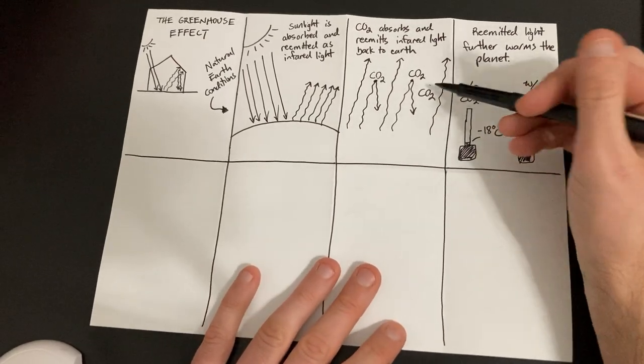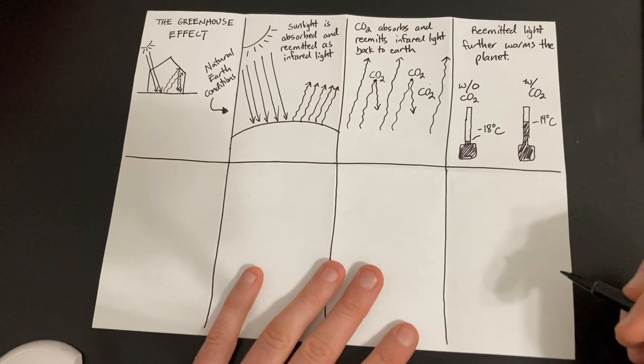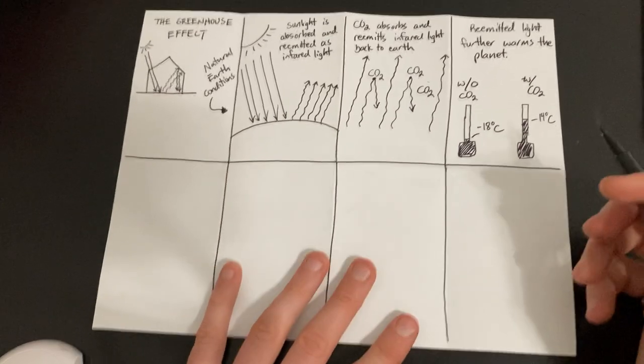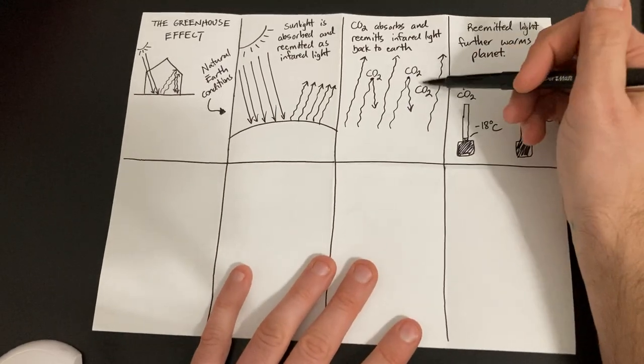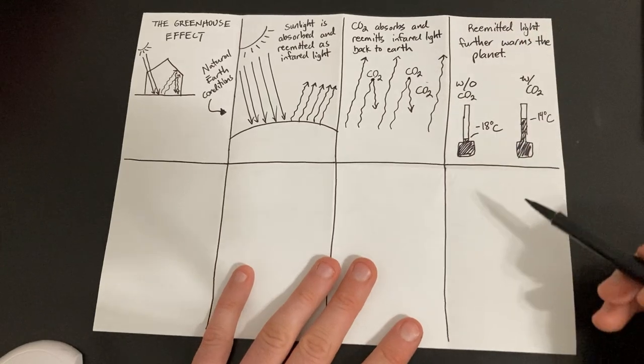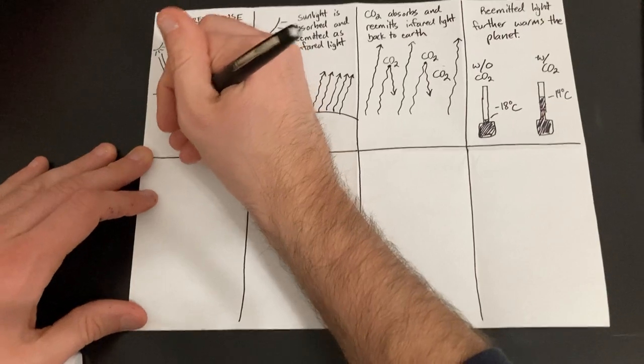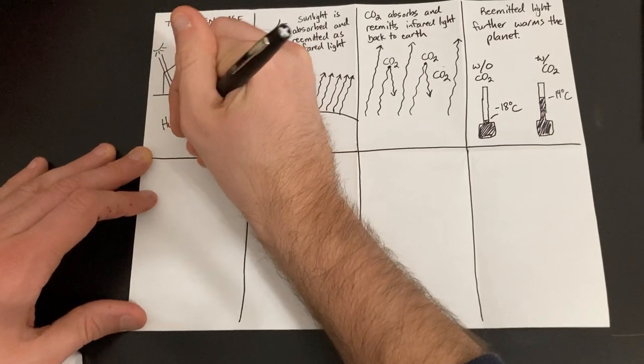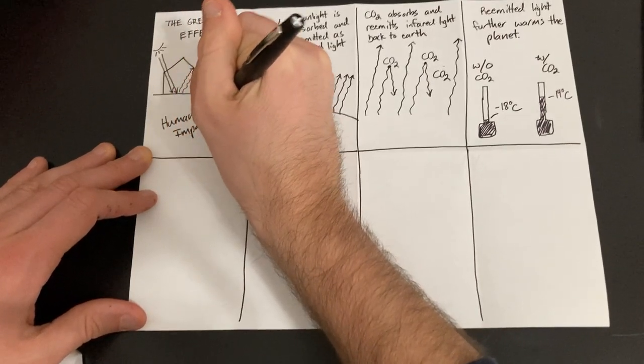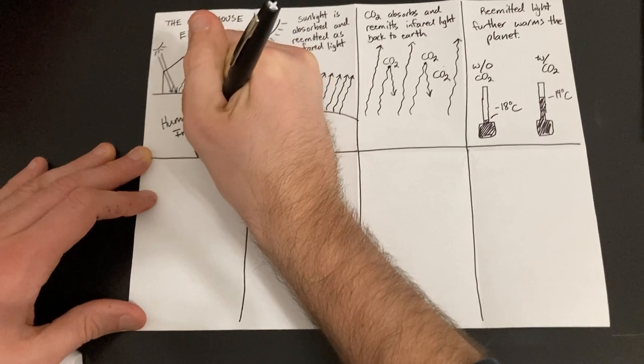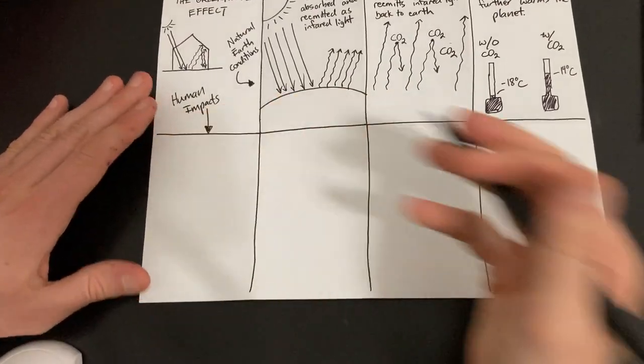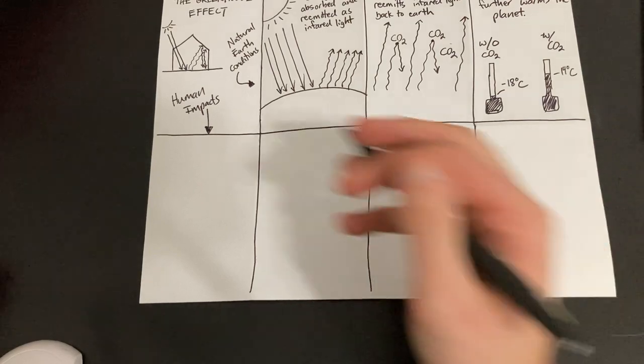So a huge jump in temperature just by having CO2. And remember, CO2 just makes up less than 1% of all the atoms and molecules that make up air, but really, really powerful at absorbing and re-emitting light back. So that's the greenhouse effect in normal conditions. But now let's look at human impacts over here.